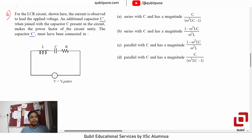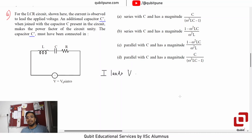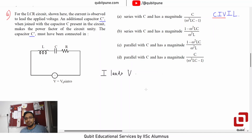They are saying that current leads the applied voltage. Now, in which circuit does current predominantly lead the voltage? Remember the mnemonic 'CIVIL.' When it comes to current leading the voltage, we consider the first three letters — meaning it should be predominantly capacitive.